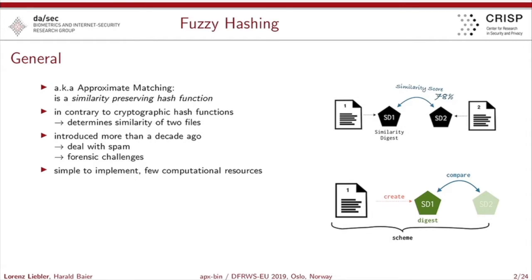It's a similarity-preserving hash function, and contrary to classical cryptographic hash functions where you actually have the avalanche effect, similarity digests are first yielded — for example, out of a given binary or out of a given file — and afterwards you could use those digests to actually compare two files. The similarity digest itself is used to yield a similarity score between two given files.